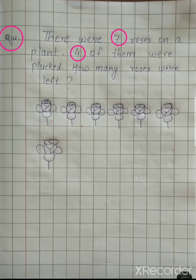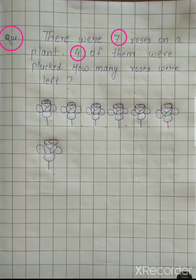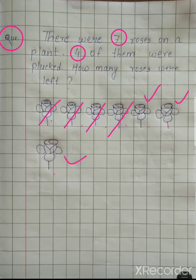Let's count the roses: one, two, three, four, five, six, seven — seven roses on a plant. Four of them were plucked: one, two, three, four. Now how many roses were left? Let's count: one, two, three. Three roses were left.